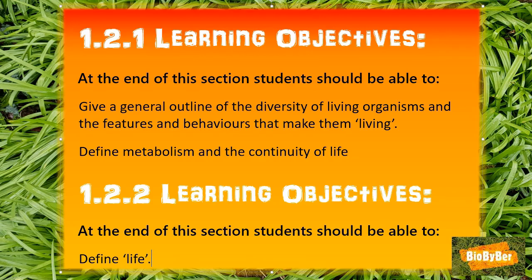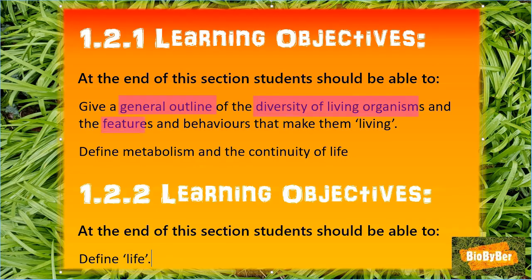What does this actually mean? What are we trying to understand? Well, it's simple enough — you have to be able to give a general outline or describe the diversity or variety of living things. You also have to be able to discuss the characteristics or features that actually make them living. We have to define the terms metabolism, continuity of life, and define life itself.